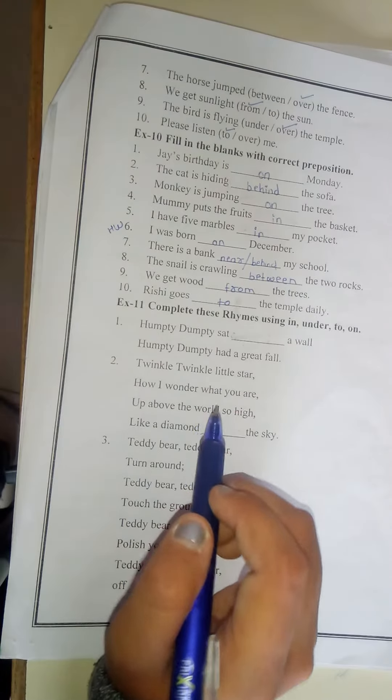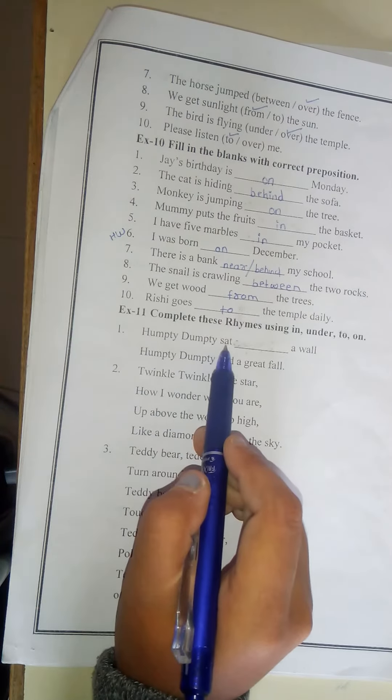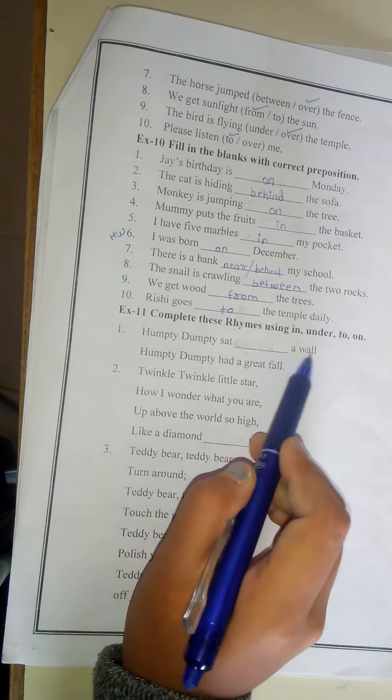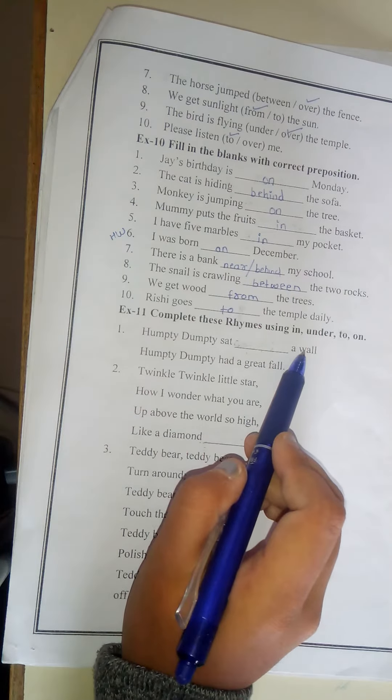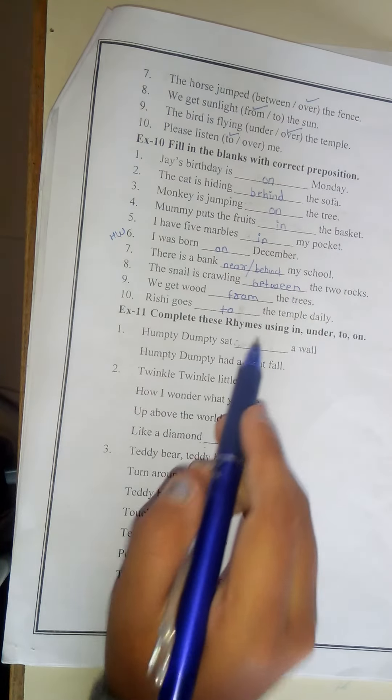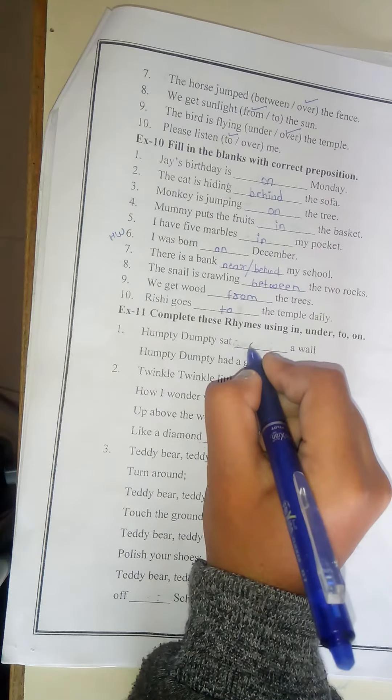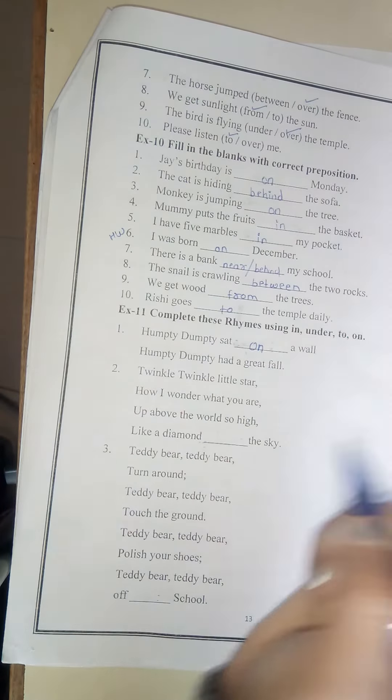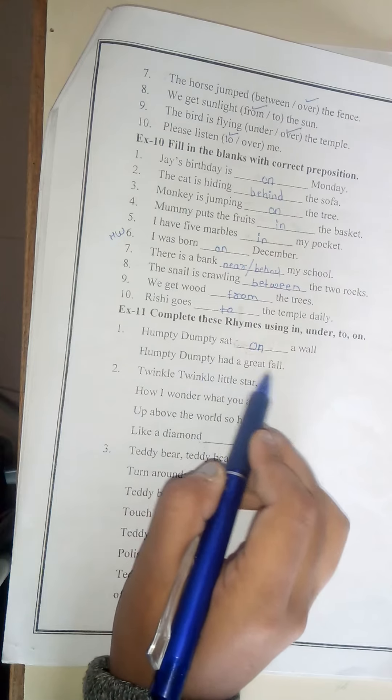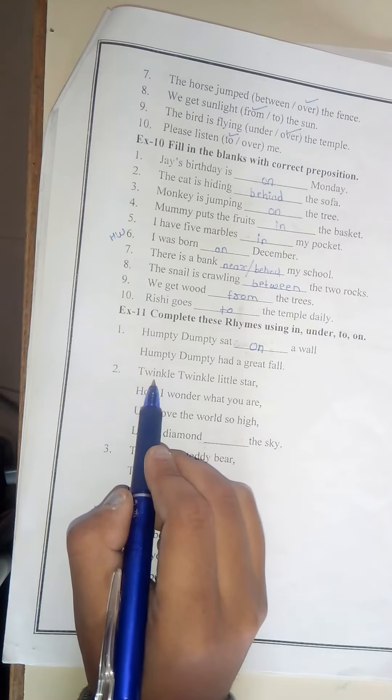Now look here. Number two. Humpty Dumpty sat blank a wall. Now here a wall is written. So Humpty Dumpty sat on a wall. Humpty Dumpty had a great fall. Number two.